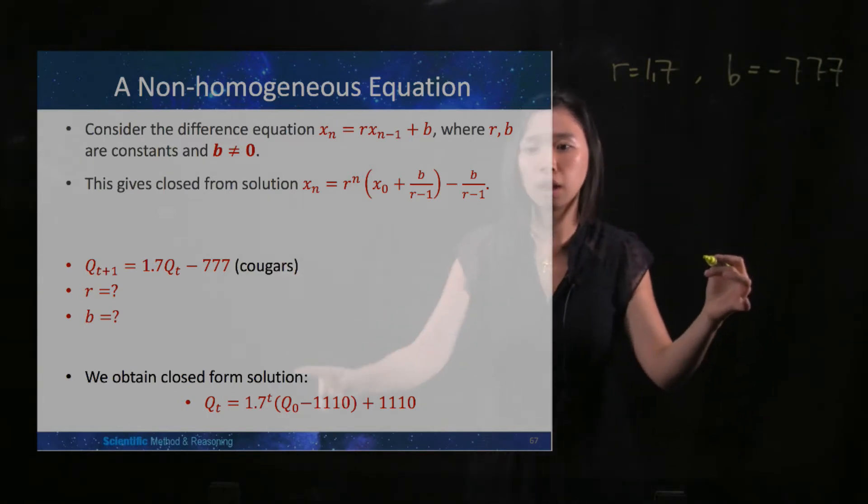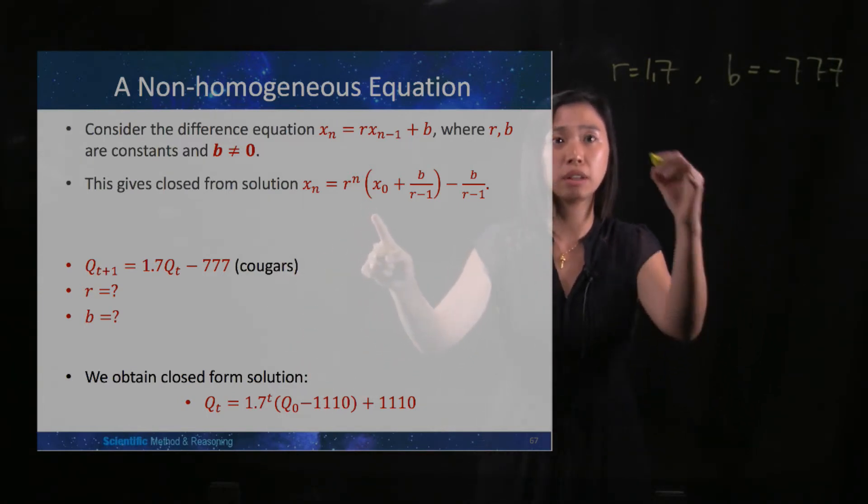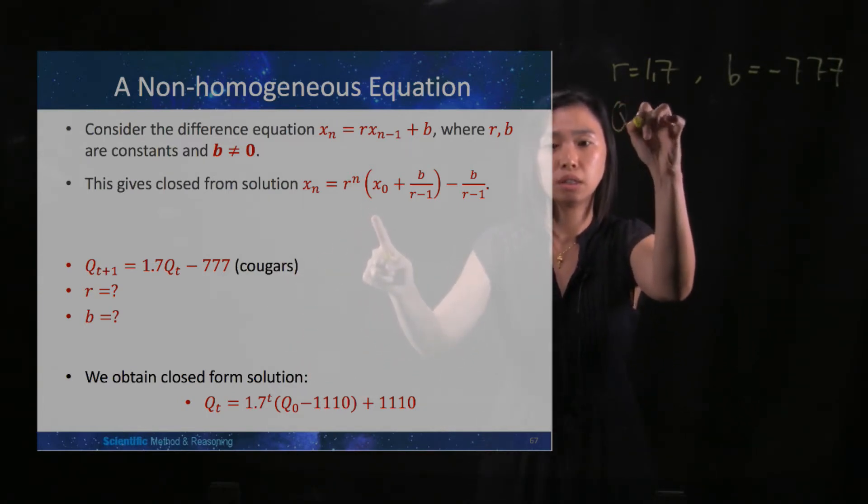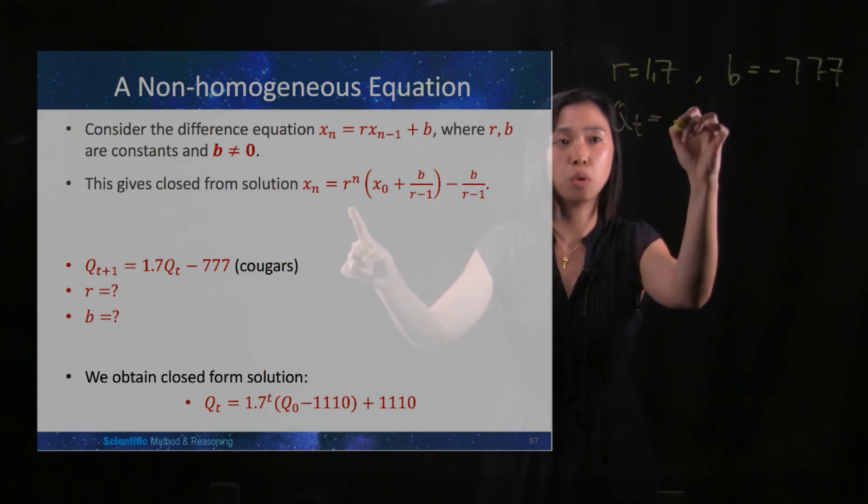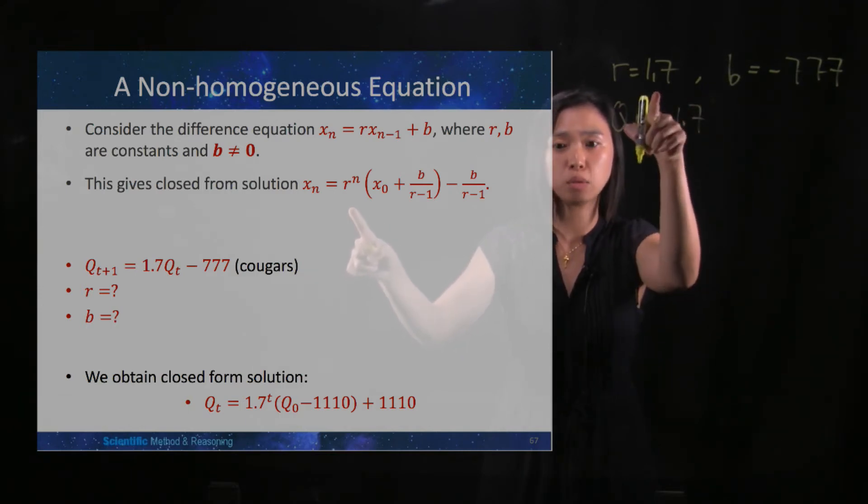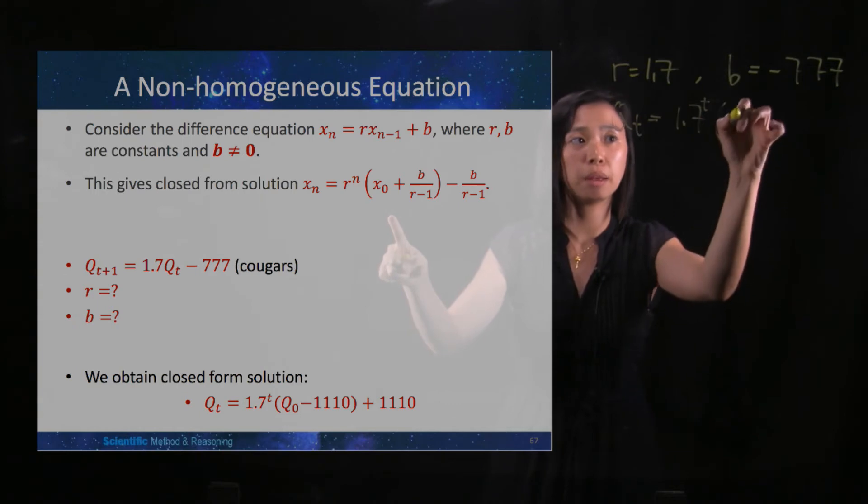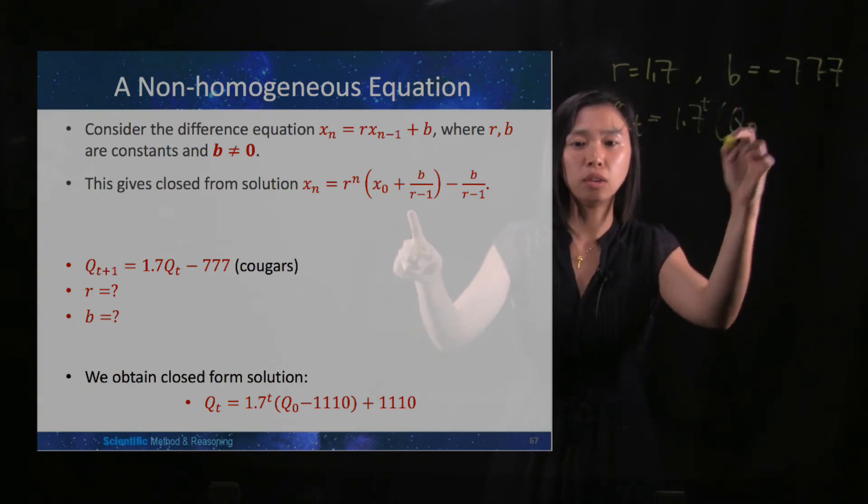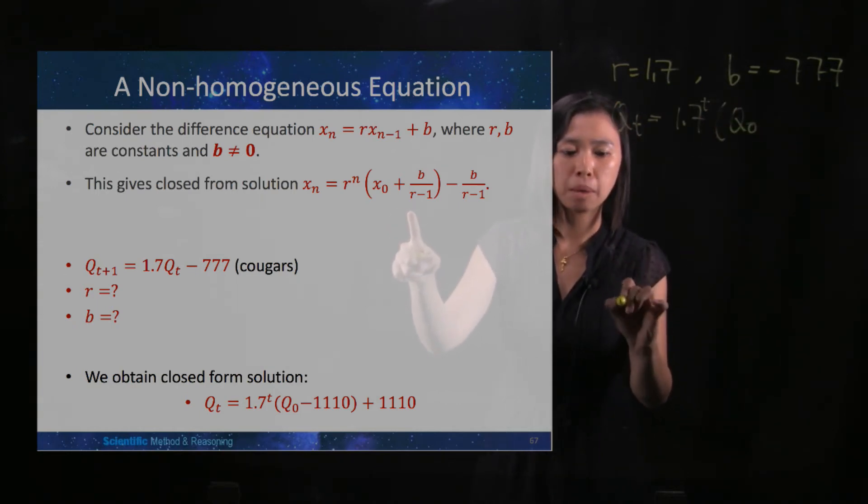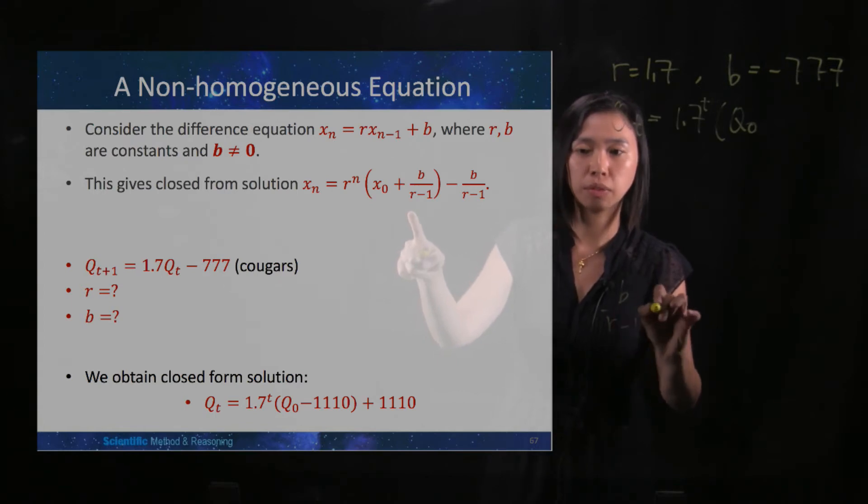All right, so we can apply the result directly, which is qt equals to 1.7, because your r is 1.7, to the power t, multiplied by q zero. And then we need to calculate b divided by r minus 1.